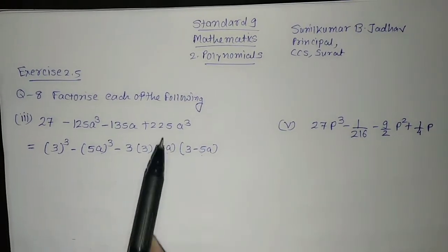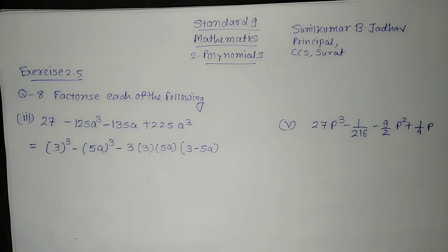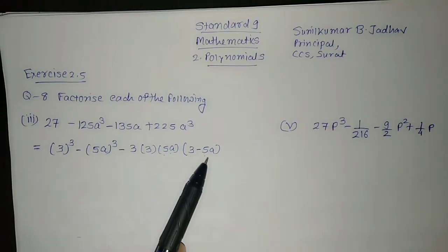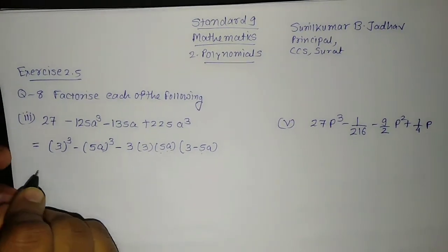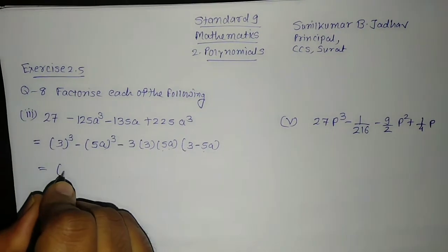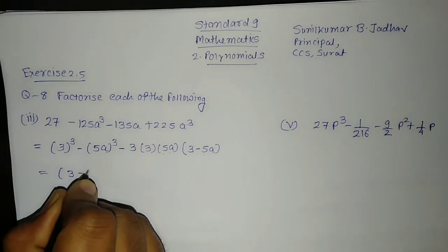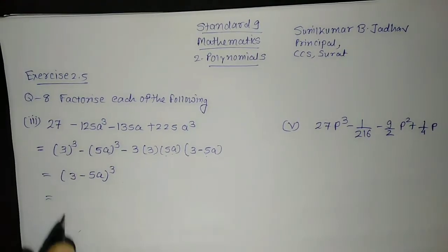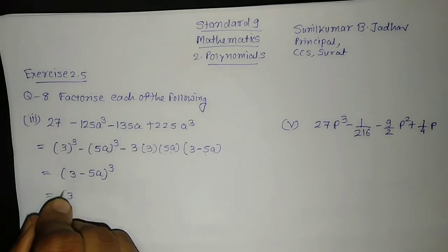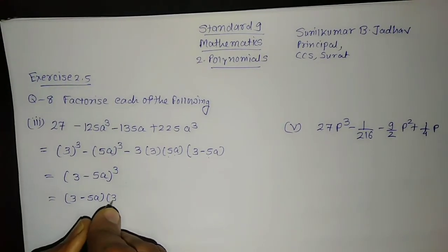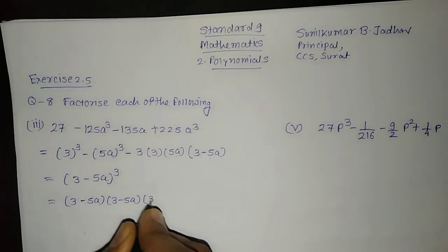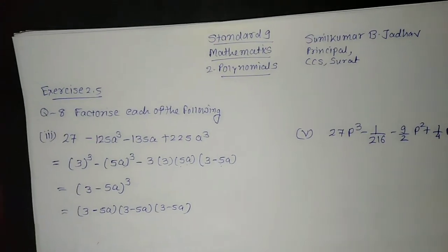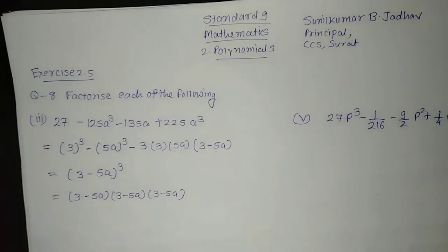A into a is a cube. So it is in this particular format. We know it is like x cube minus y cube minus 3 into x into y into bracket x minus y. So what we should write for it? As per this we can factorize and write it as 3 minus 5a whole cube. If we write it in another form that would be 3 minus 5a, written 3 times multiplied together, and we get the answer 3 minus 5a whole cube. So this is very simple.